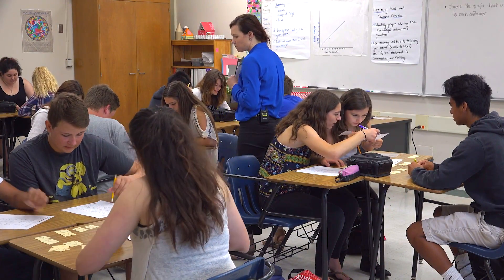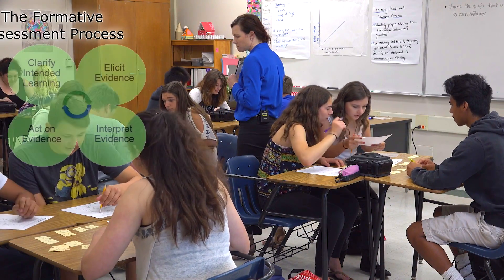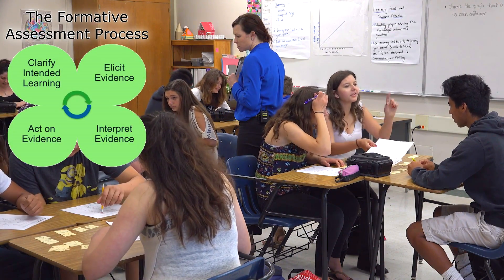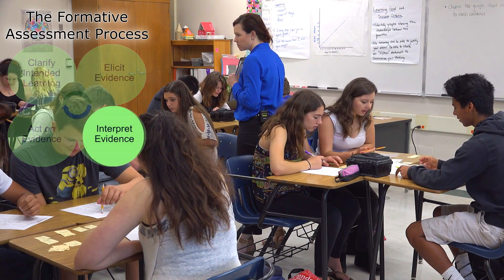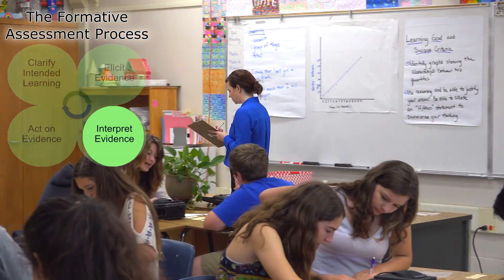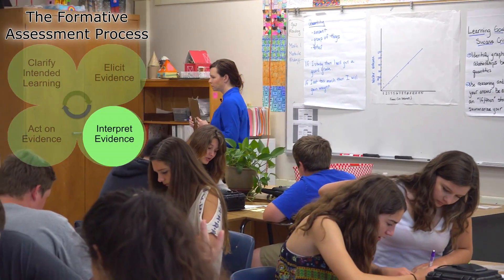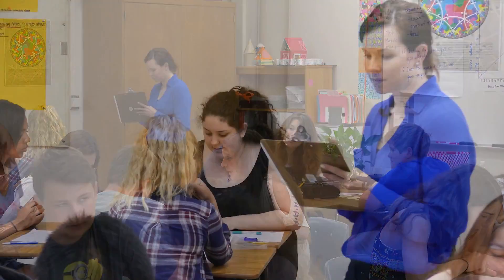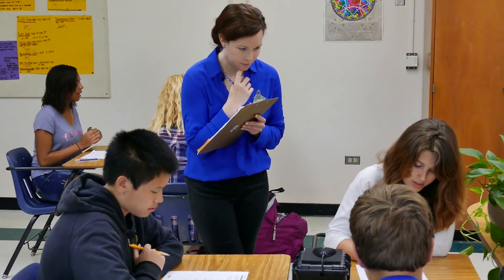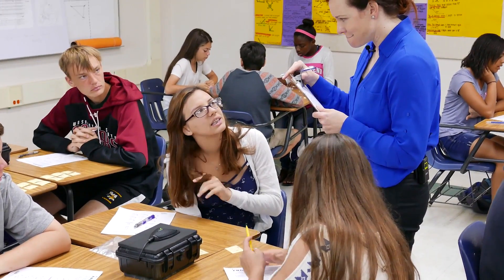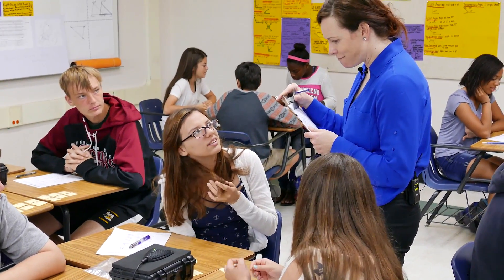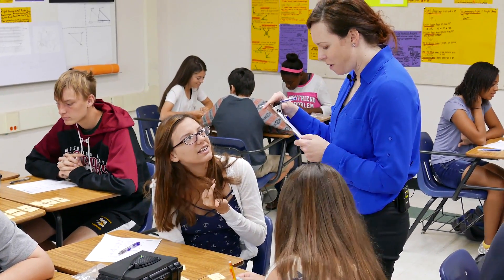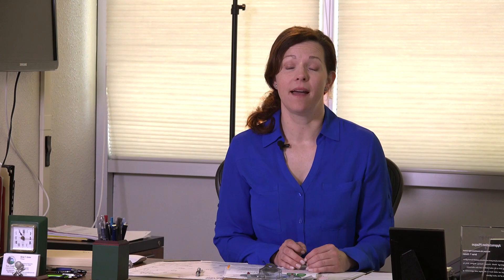As I walked around listening to the groups, I was jotting down key words I was hoping to hear — words such as rate, increase, quicker, slower, faster. As I went by each group, I jotted down the words I heard that group say. If I felt confident they were on to the correct ideas about the relationship between volume and height, I'd move on to the next group.